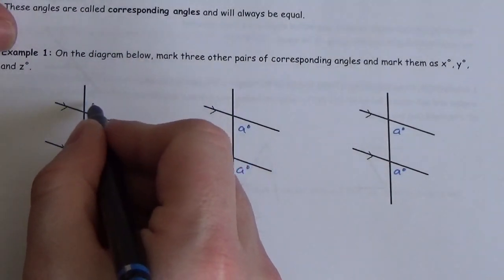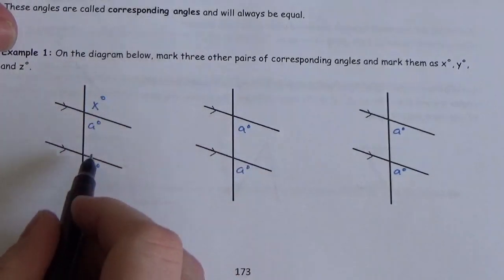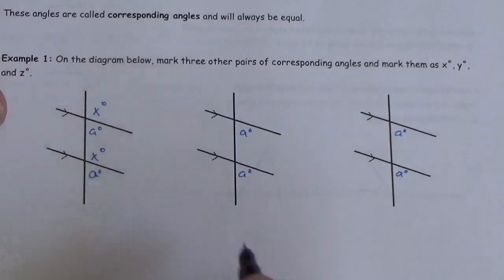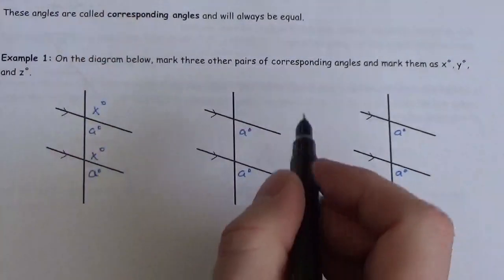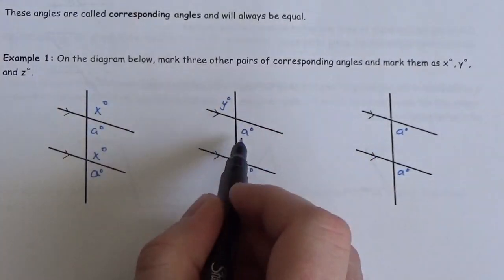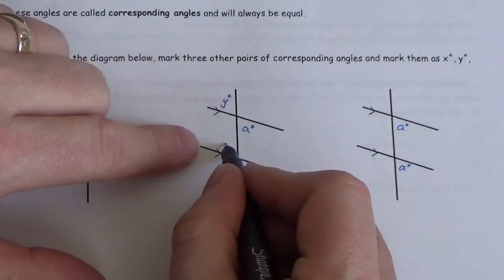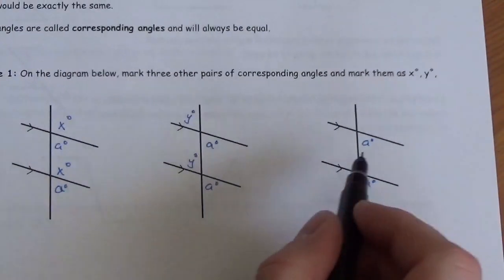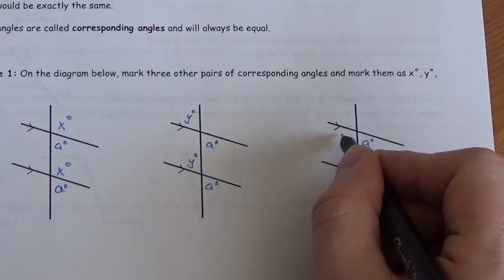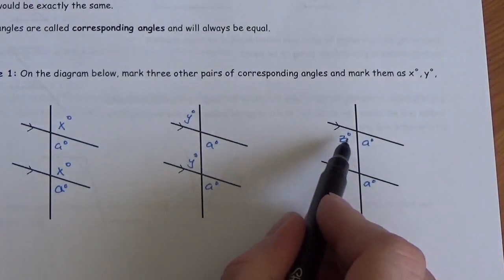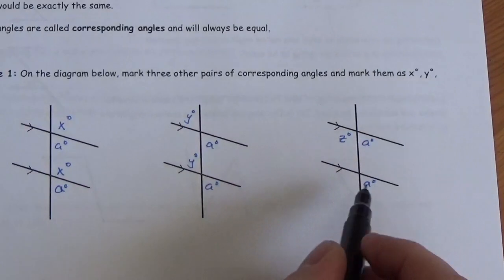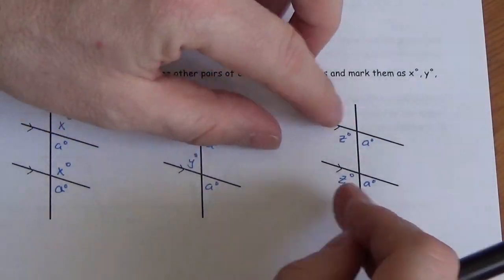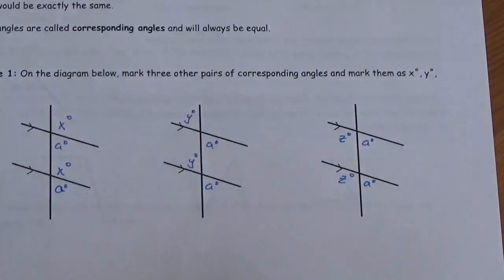If we call this one X — it's right above the A — then down here, the angle right above the A would also be X. Y is vertically opposite to A, so the angle down here vertically opposite to A would also be equal to Y. And over here, we call this one Z — it's supplementary to A, on this same parallel line, and so is the corresponding one down here.